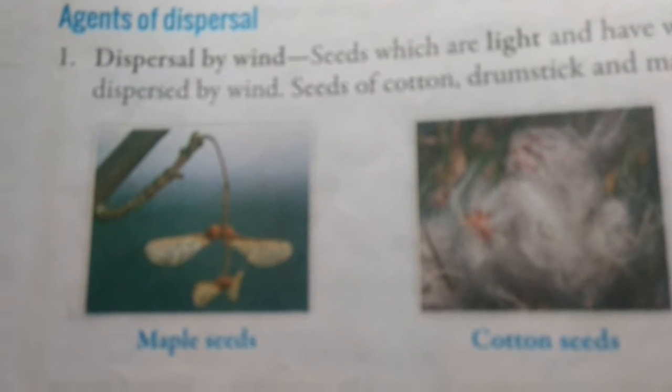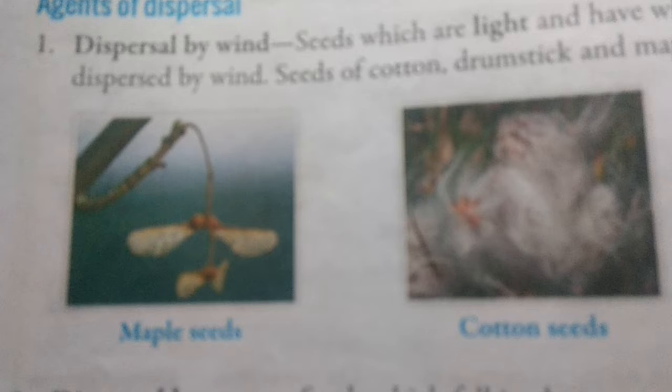Number 1: Dispersal by wind. Some fruits have very light and hairy or wind-shaped seeds which are easily blown to far off places. Examples: dandelion, cotton, etc.